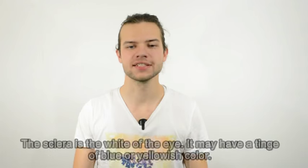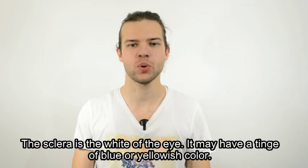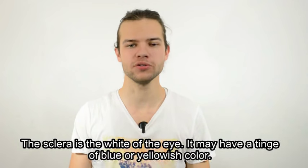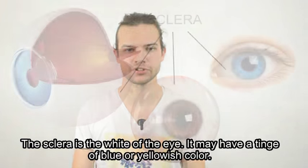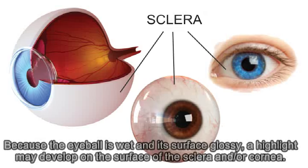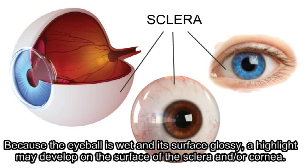The sclera is the white of the eye. It may have a tinge of blue or yellowish color. Because the eyeball is round and its surface glossy, a highlight may develop on the surface of the sclera and/or cornea.